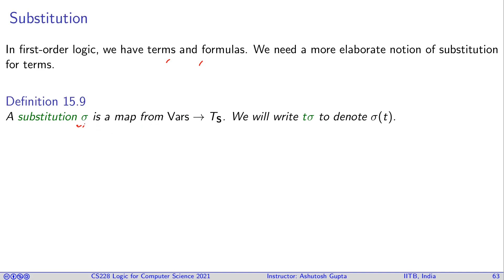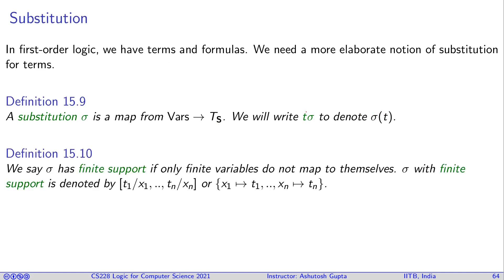So you have a substitution sigma. What is a substitution? It is a function which takes a variable and returns a term. A term may be closed or not, doesn't matter. And it's usually written t sigma. Instead of writing sigma t, we write t sigma. Later it will become clear, writing compositions become much easier in this form.